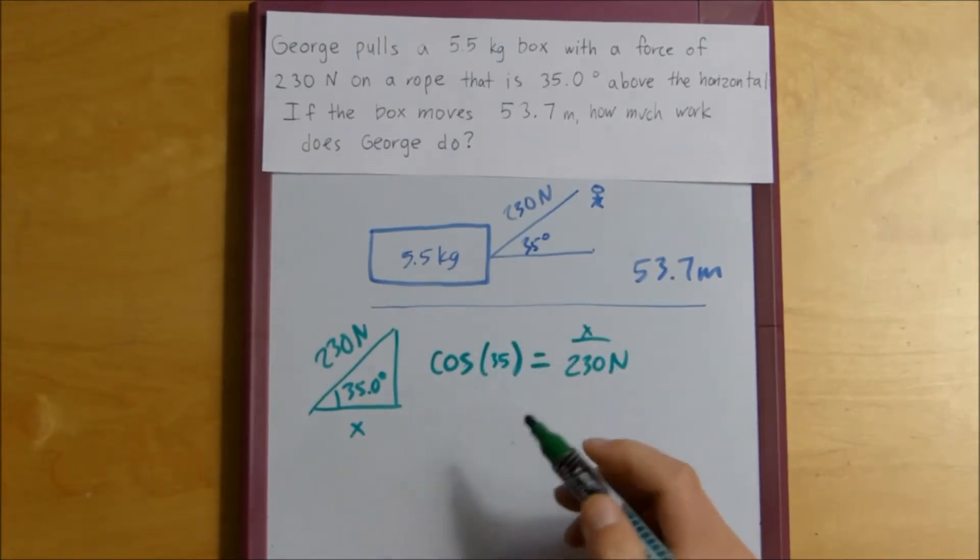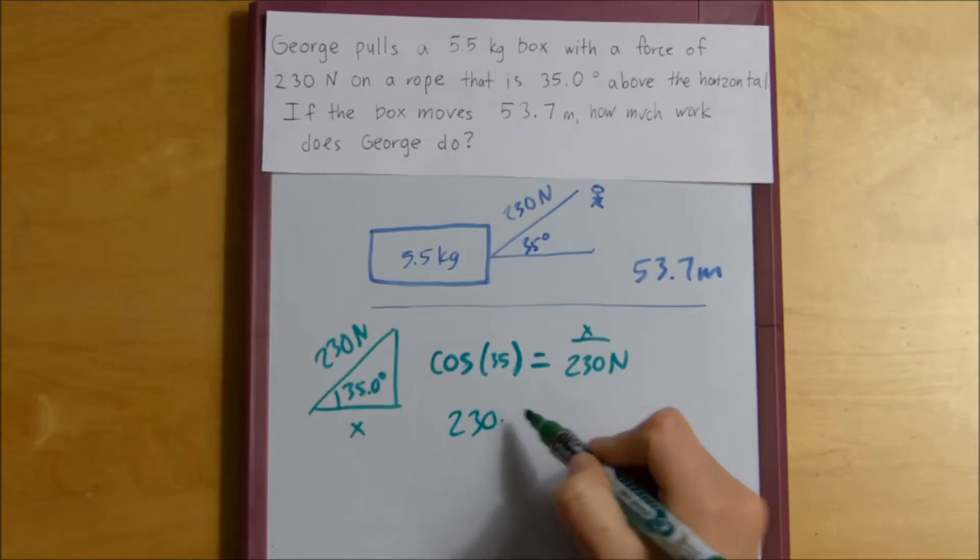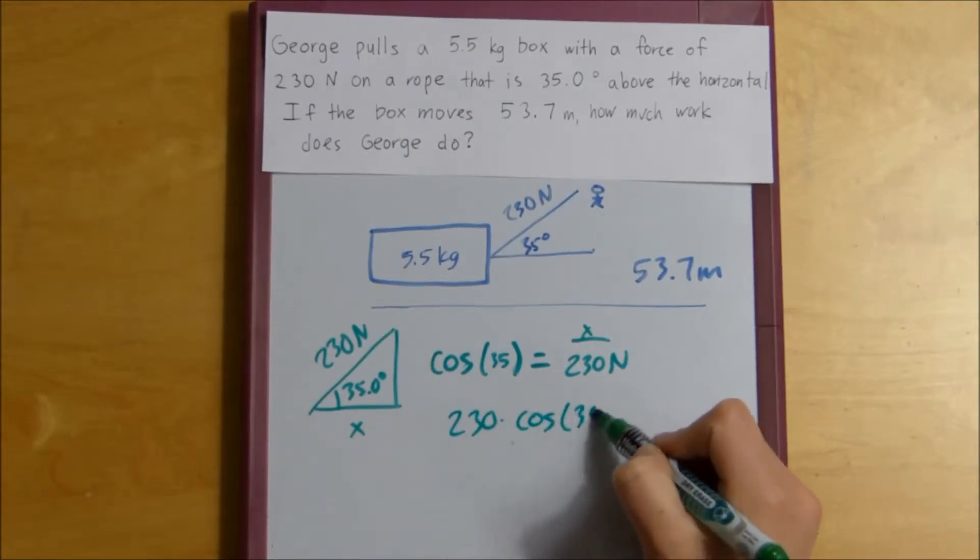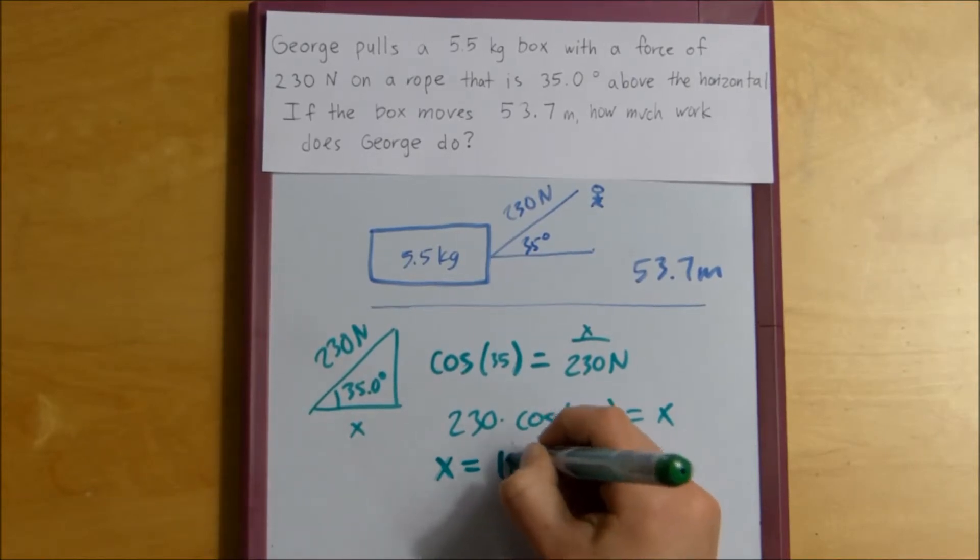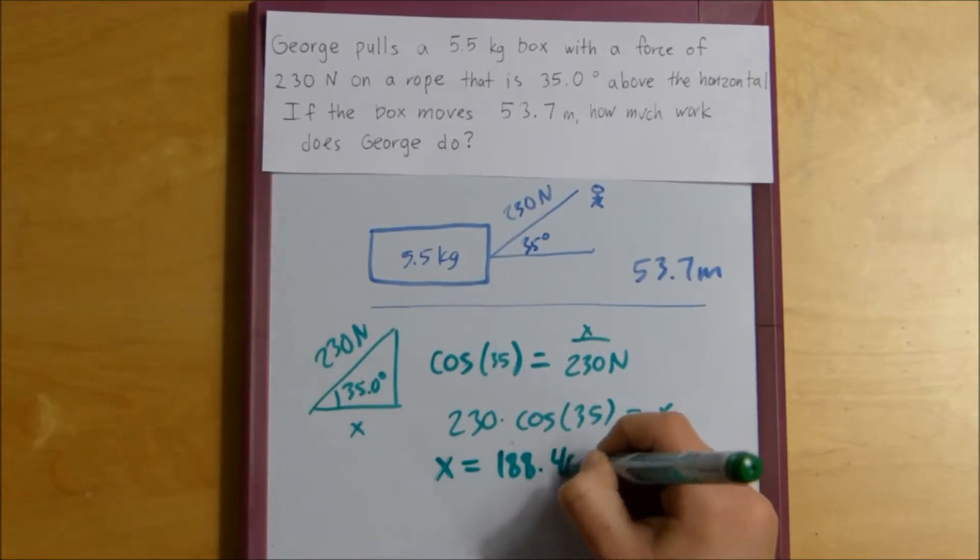And then we multiply that across. 230 times cosine of 35 equals x. And then if we plug it in, we see that the horizontal component is 188.405.